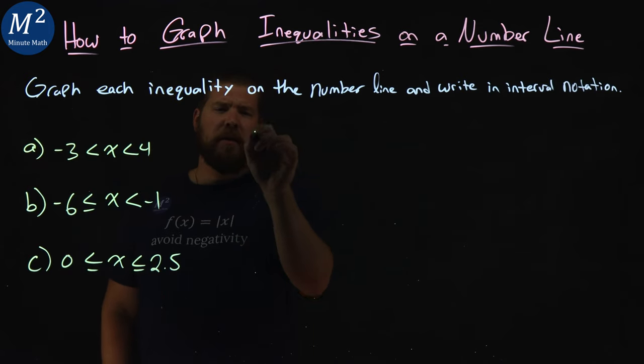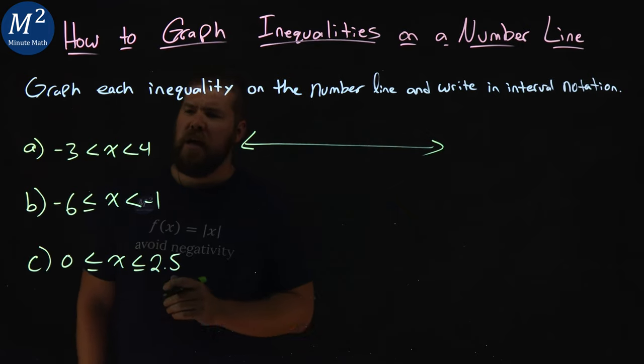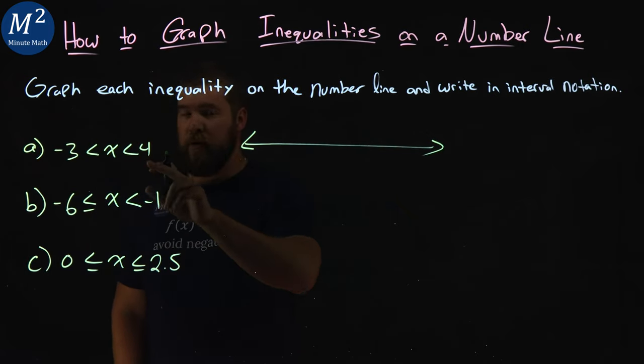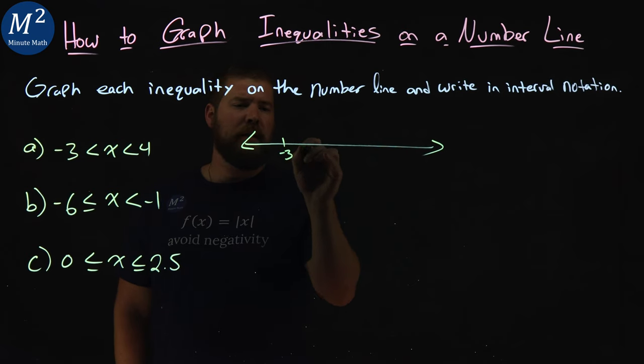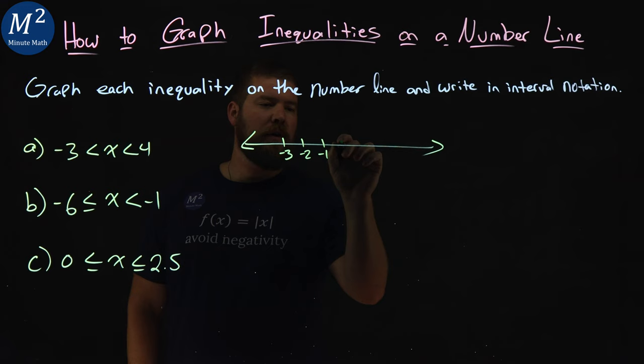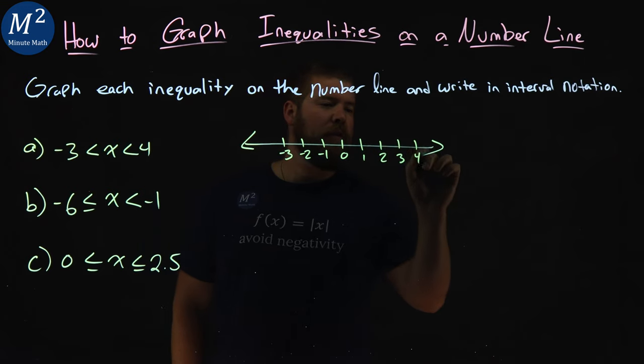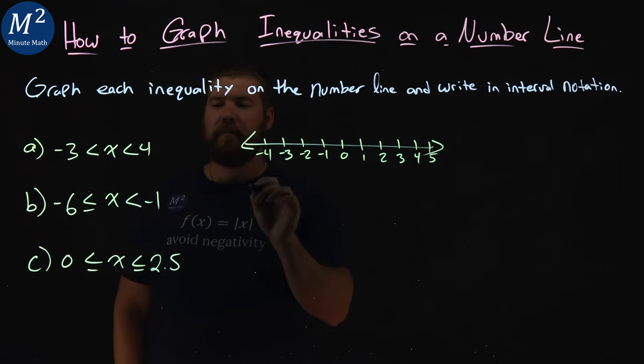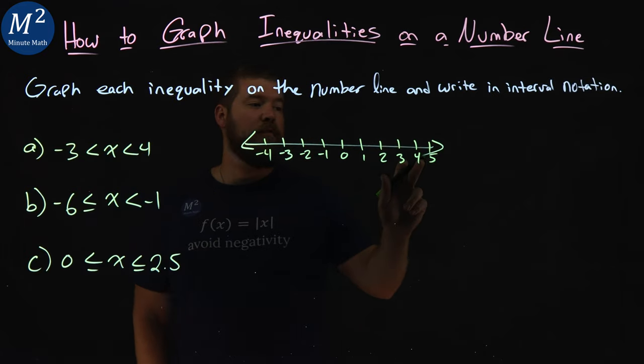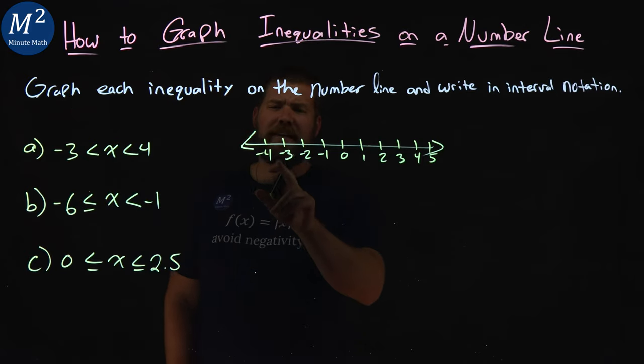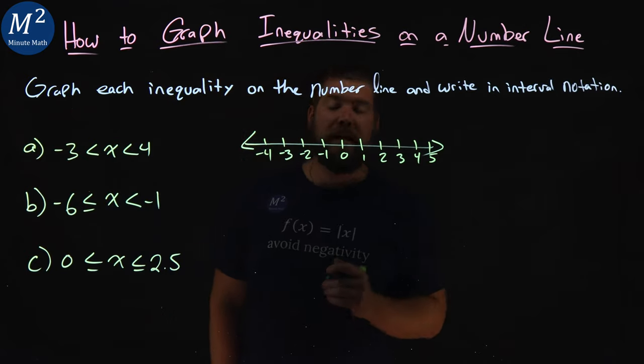We have negative 3 for a, so negative 3 is less than x is less than 4. We're going to graph this inequality on the number line and write it in interval notation. So we're going to make a number line here, and we have a range from negative 3 to positive 4. Let's start with the negative 3 down here and then fill in the number line from there: negative 2, negative 1, 0, 1, 2, 3, 4, 5, let's go negative 4.